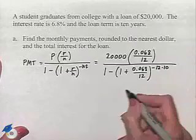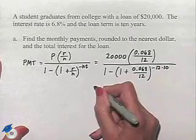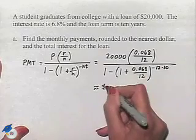We'll use a calculator in order to evaluate this and we come up with an amount rounded to the nearest dollar, which is approximately $230.